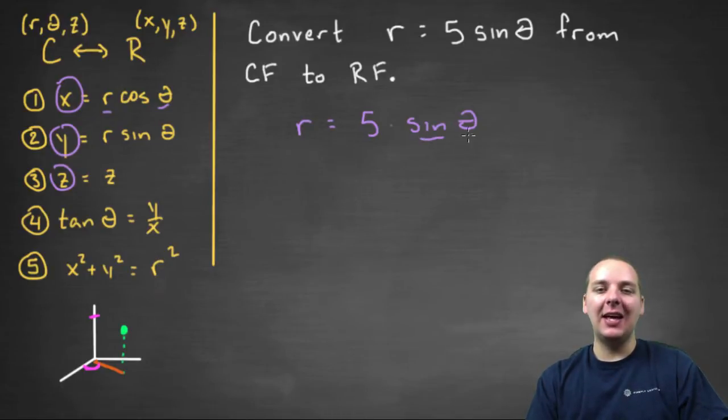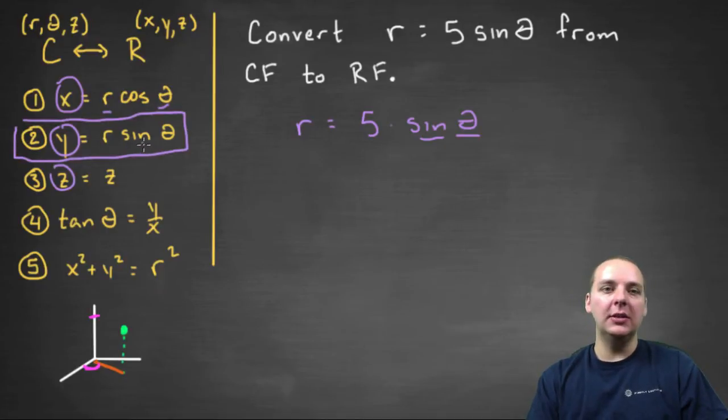Here I've got a sine theta, but over here on this side the only thing that I see that remotely has a sine is number two. But that doesn't help tremendously because it has to be r sine theta to convert to y, not just a sine theta. So what do we do?